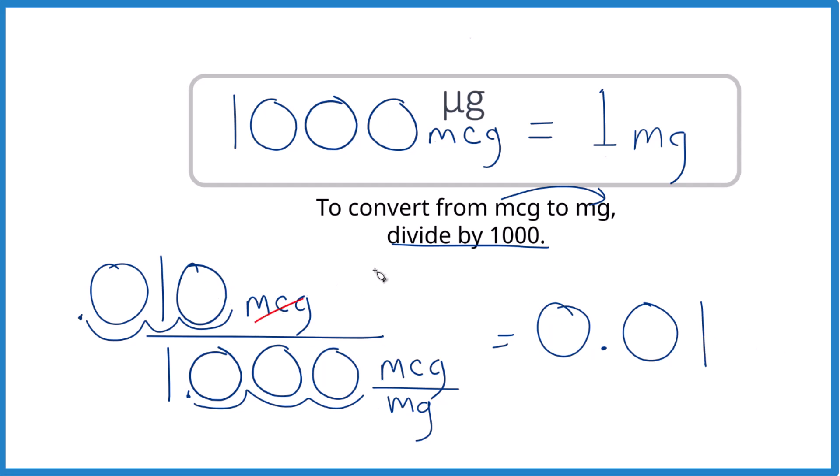Because we have micrograms here and here, they cancel out. We have milligrams and that's what we're looking for. So 10 micrograms equals 0.01 milligrams. It's Dr. B and thanks for watching.